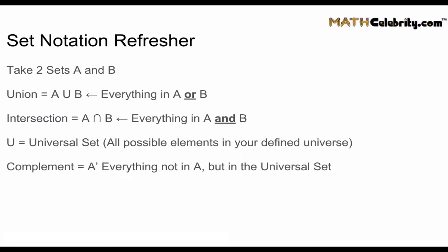Let's start with two sets, A and B. The union of the two sets, A union B, is everything in set A or in set B. The next principle is the intersection. Remember, 'and' goes with intersection — so A intersection B is everything in set A and in set B.